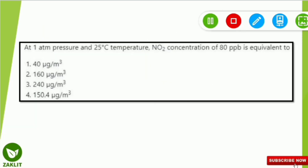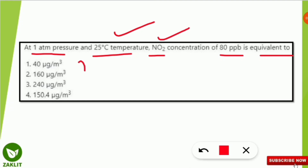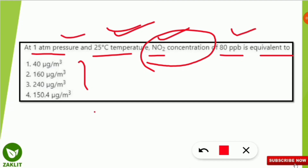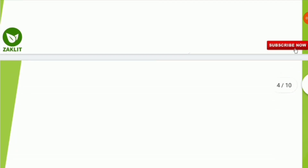At one atmospheric pressure and 25 degrees Celsius (298 Kelvin), the concentration of nitrogen dioxide (NO₂) is 80 ppb — that is parts per billion. The question asks: what is this concentration equivalent to in micrograms per meter cube? So we need to convert the concentration of nitrogen dioxide from ppb to µg/m³, given the temperature and atmospheric pressure. Let's go to the next slide where we will solve this question.